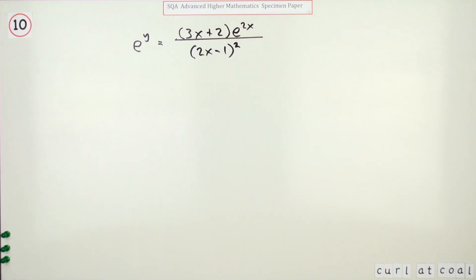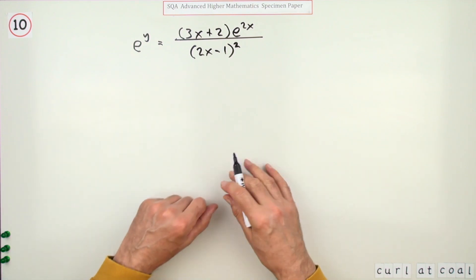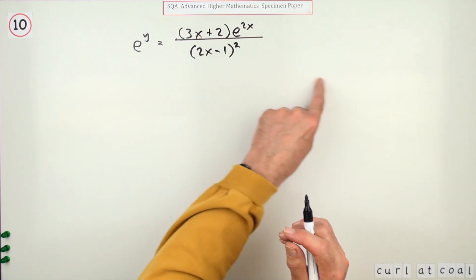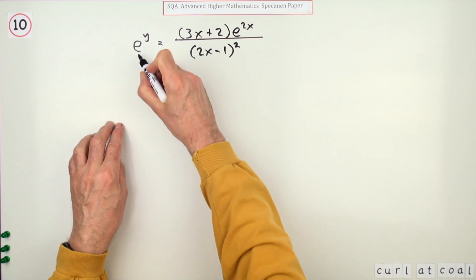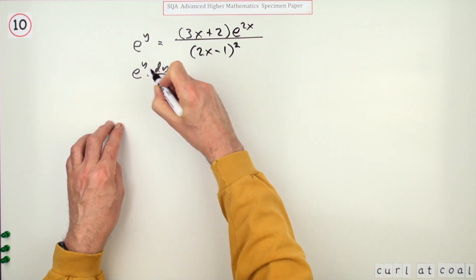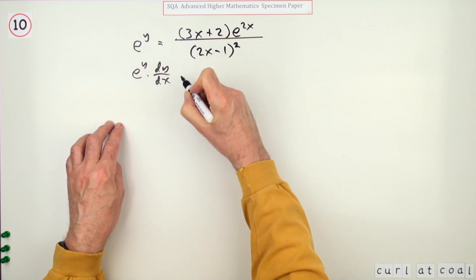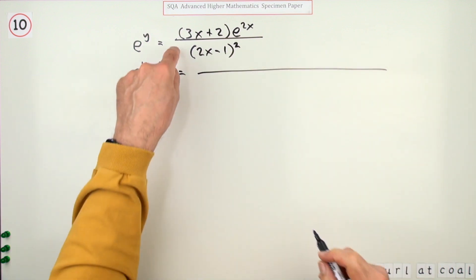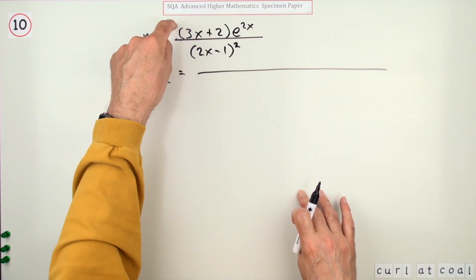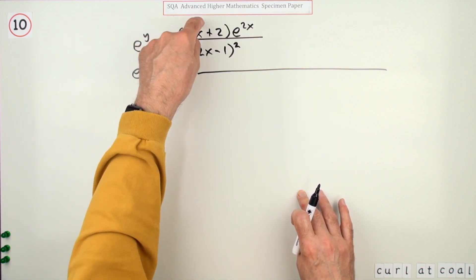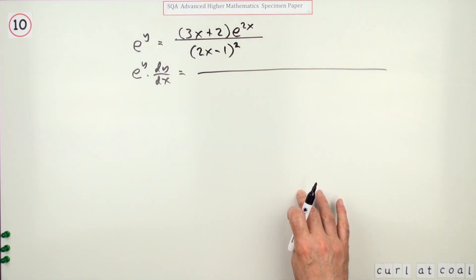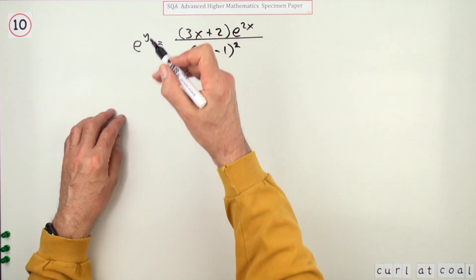Well if you didn't use logarithms here that would actually become quite a cumbersome beastie because that side would stay as e to the y but be multiplied by the derivative of that inner function there divided by dx and this would turn into a big nasty quotient rule. You've got the denominator and this part in the top here is made up of a product but a product of an expression and another function of a function. So you don't want to be doing that.